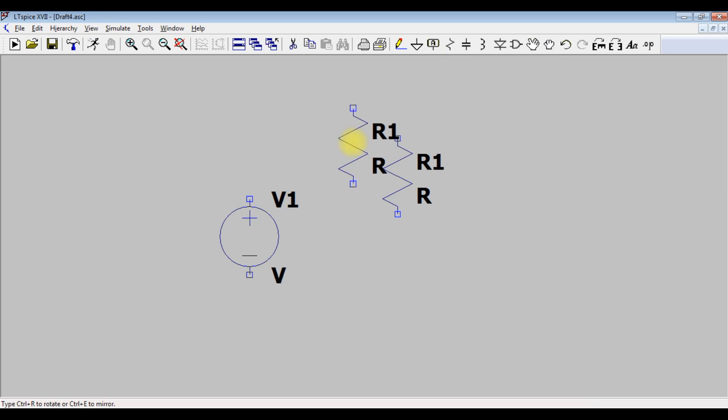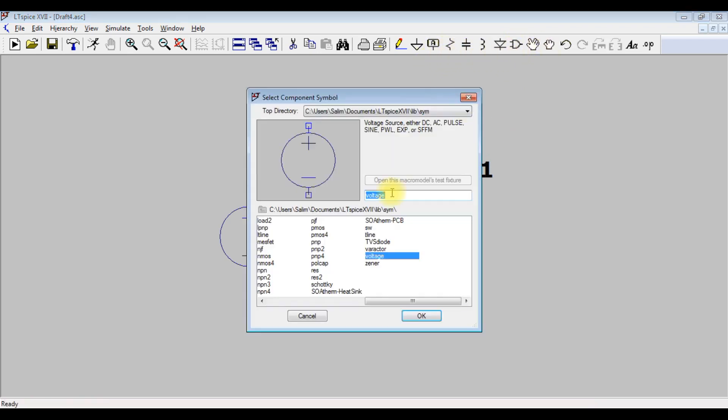Resistor. To rotate the resistor, press control R. Then a diode and a battery.